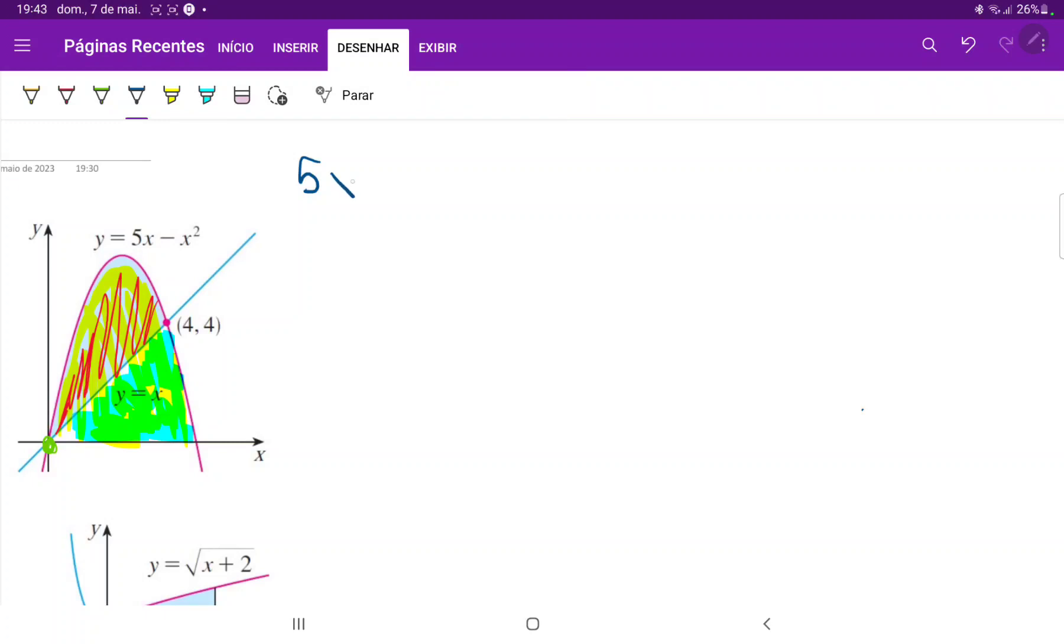So that is 5x minus x squared is equal to x. Now I'm just going to bring all of these to one side and factor it. So 0 is equal to x squared minus 5x plus x. And then 0 is equal to x times x minus 4. And now we can very clearly see that they intersect at x equals 0 and at x equals 4.